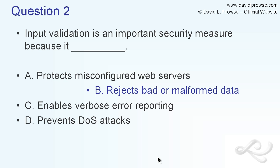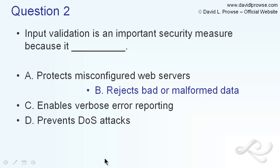The other answer, 'protects misconfigured web servers,' isn't quite right because it's not that the web server is misconfigured — it's that the form wasn't properly input validated; it wasn't coded properly. Enabling verbose error reporting has nothing to do with input validation. There are many ways to increase the verbosity of error reporting, such as during boot or in log files, but that's unrelated to this question.